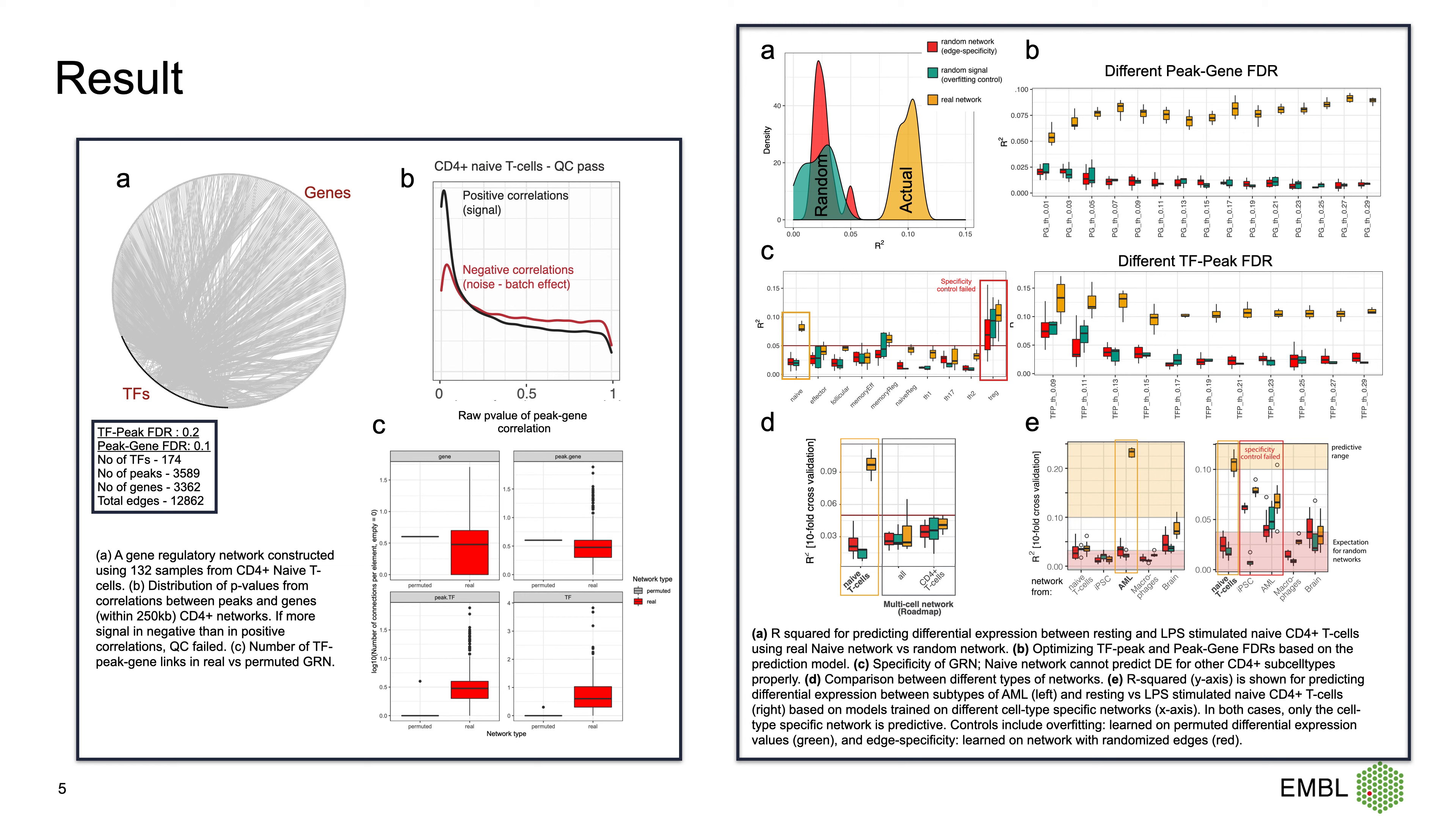In the right panel, we have results from phase two. In part A, you can see R-squared for predicting differential expression between resting and LPS-stimulated naive CD4+ T cell using real versus random network. It shows the actual network performing much better.